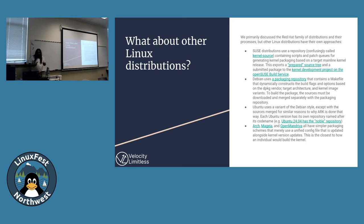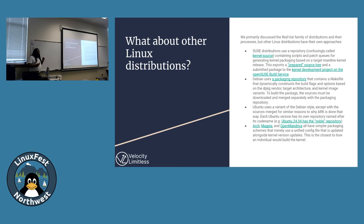Debian uses a packaging repository containing a Makefile that runs inside itself to construct the build flags and options based on what it detects in the build environment — through the Debian vendor, target architecture, and image variants — to build a package. The sources have to be downloaded and merged with the packaging files separately, then it runs through itself a few times to generate its final Debian packaging files, runs itself again, revalidates itself, and eventually builds the final package. You could consider it self-modifying code, except it's self-modifying Makefiles and Perl scripts — Debian is Perl and Make fused into an ugly unholy mess — with some mangled source trees for added fun.